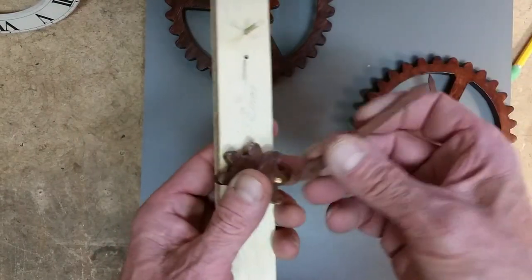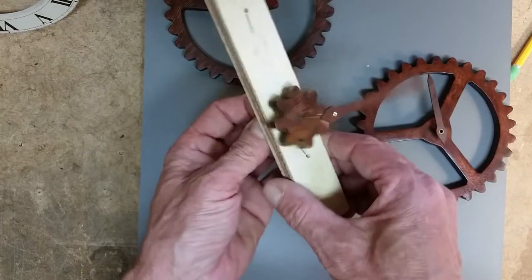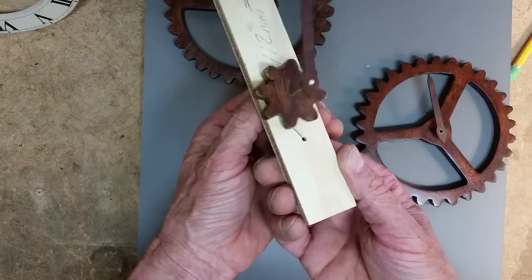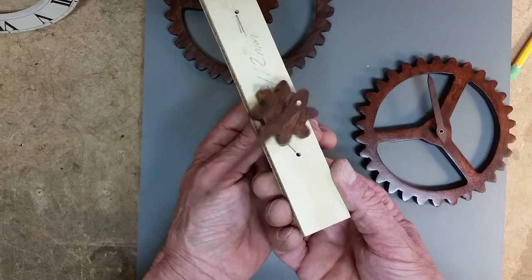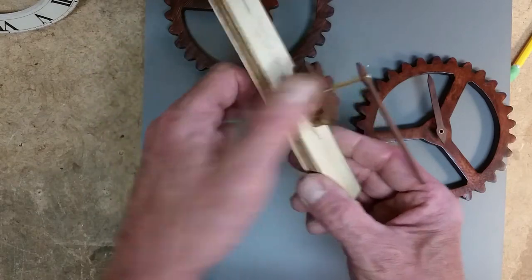Also, it's very important to know that this minute hand here has a 1/8 inch hole in it and it's hooked directly to that shaft right there. So when this gear behind here turns this gear, it will also turn the minute hand.